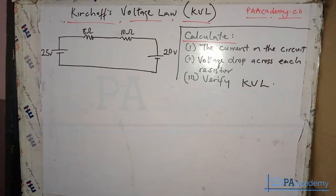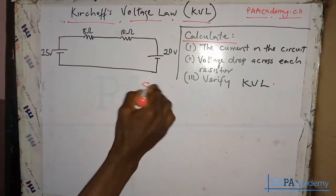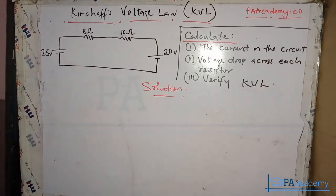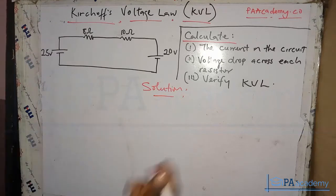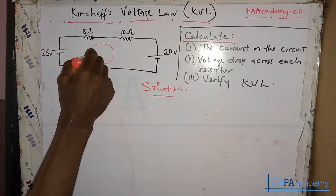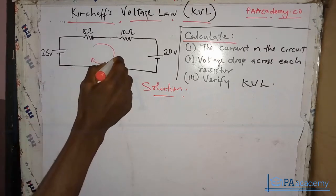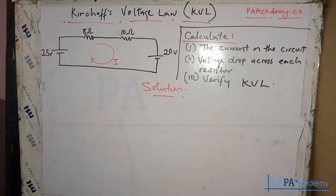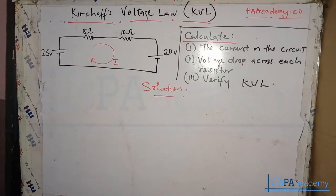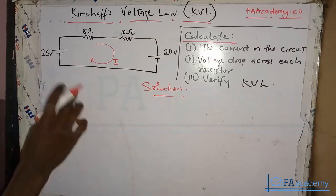Let's start with Question 1: calculate the current in the circuit. Remember from Part 1, the first step is to decide the direction of your current. I like to choose the clockwise direction, so we will use clockwise here. Once you indicate the direction of current, you can choose clockwise or anti-clockwise — then pick the polarity based on the direction of the current.